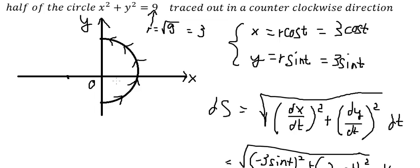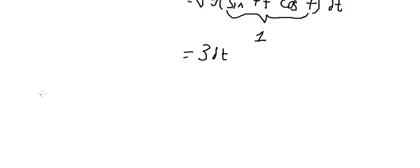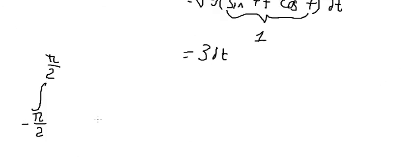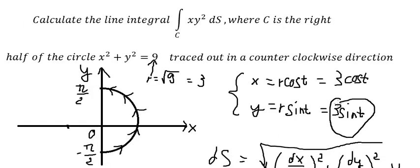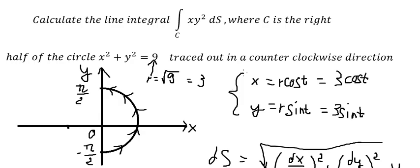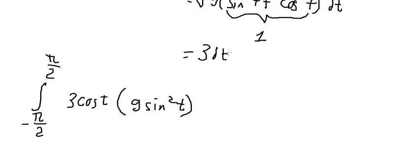About the bounds: looking at the graph, the right half goes from −π/2 to π/2. So the integration will start from −π/2 to +π/2. We substitute x for 3·cos(t), and y² becomes (3·cos(t))² which equals 9·cos²(t). And ds we substitute as 3·dt.